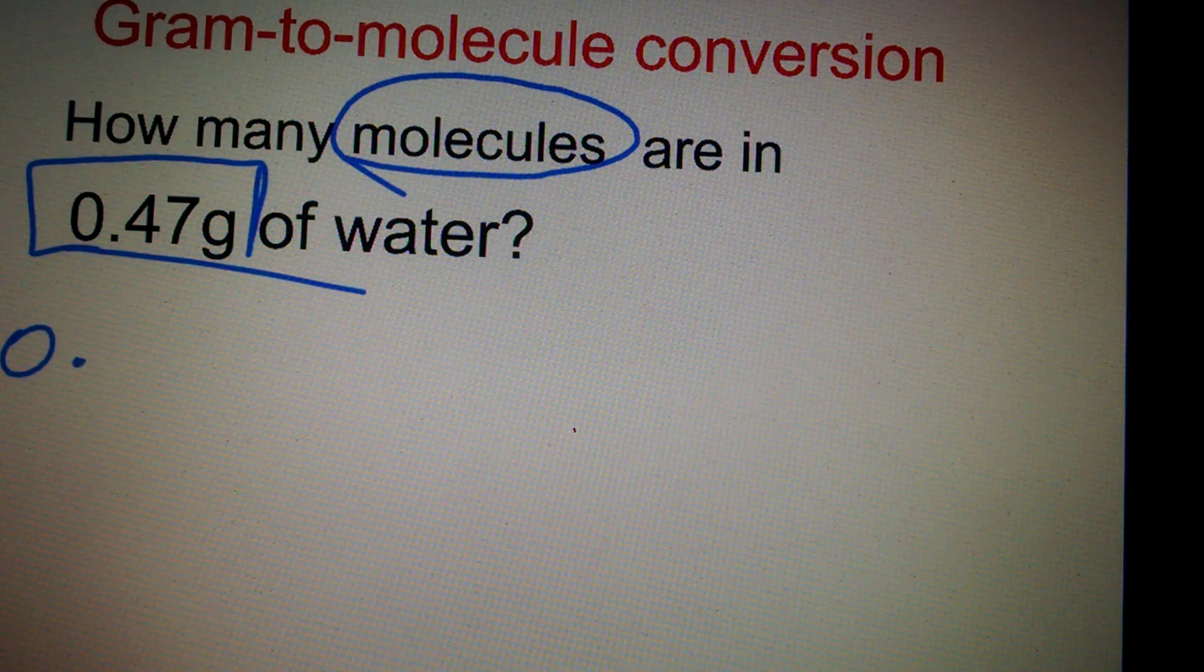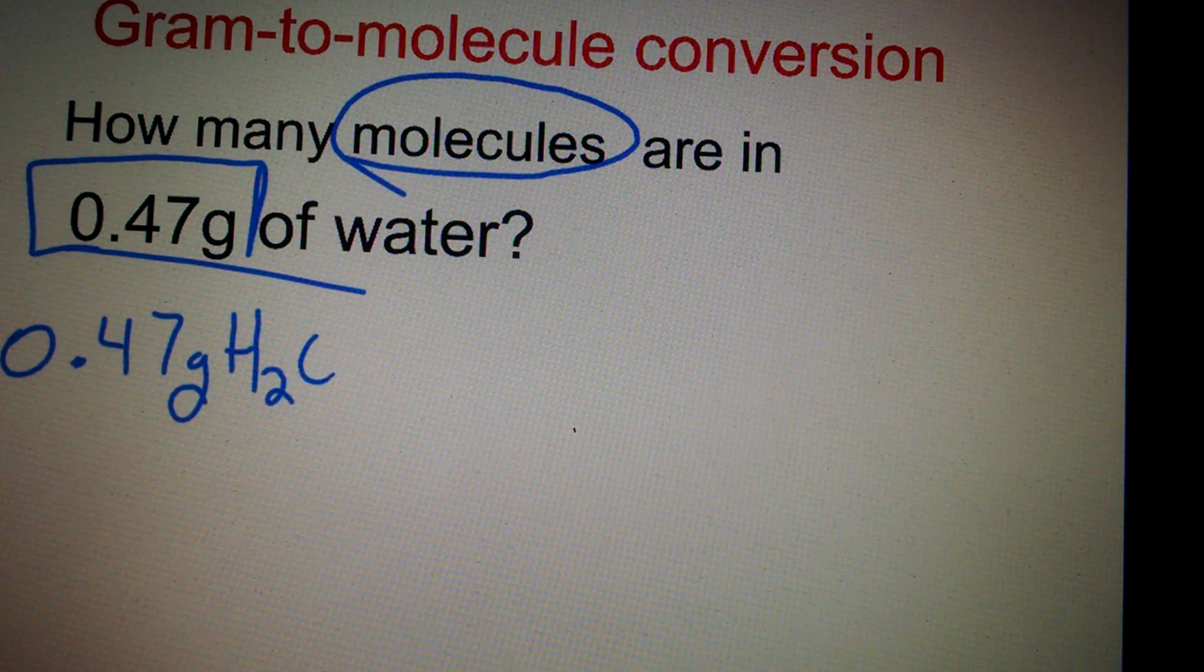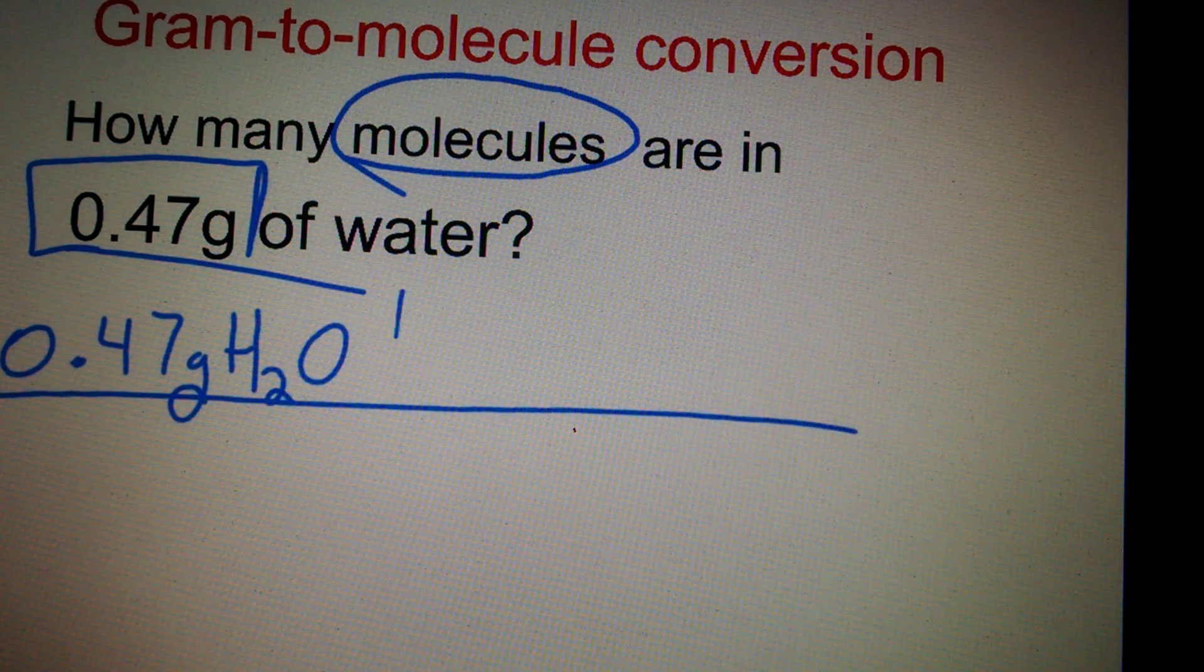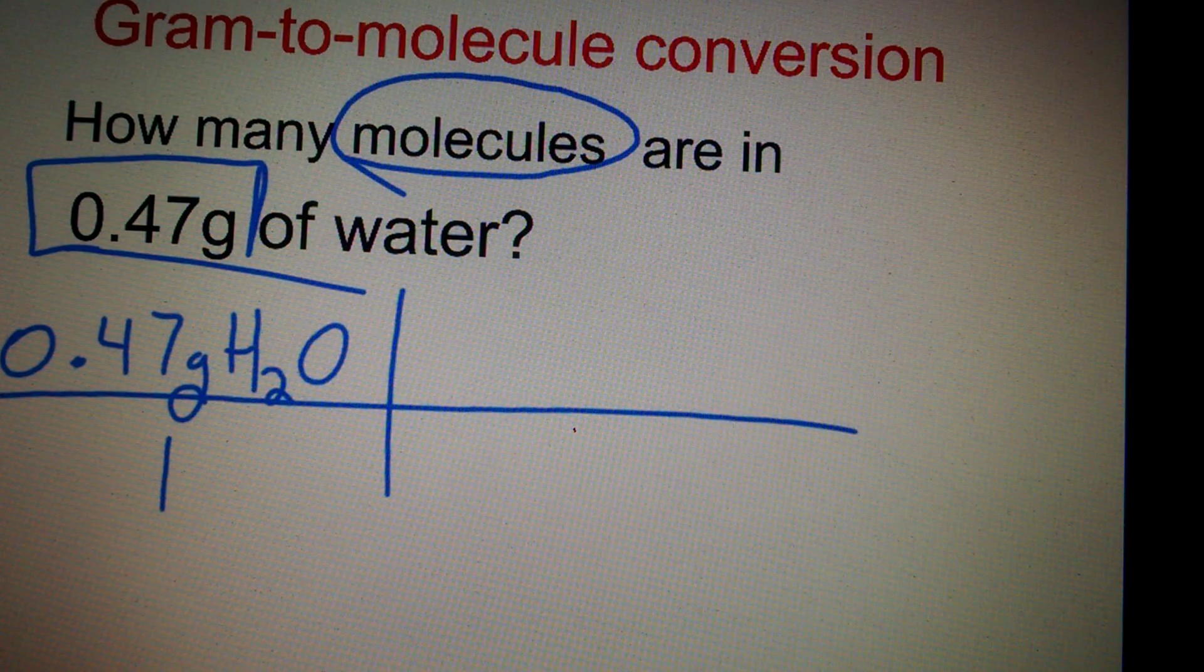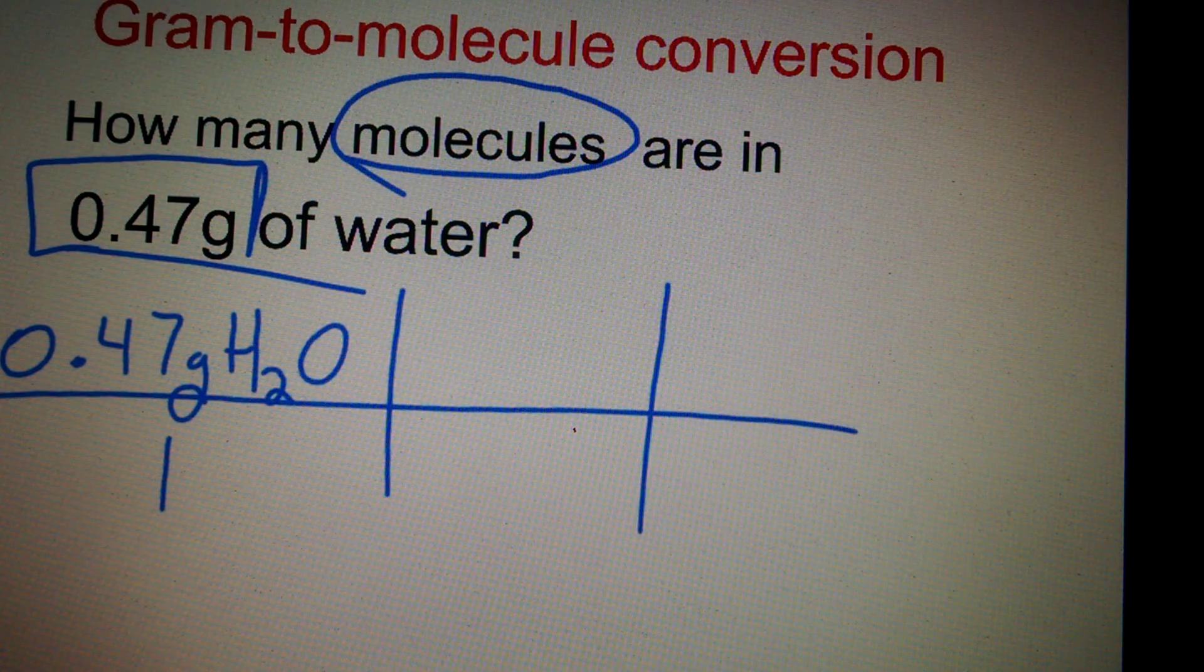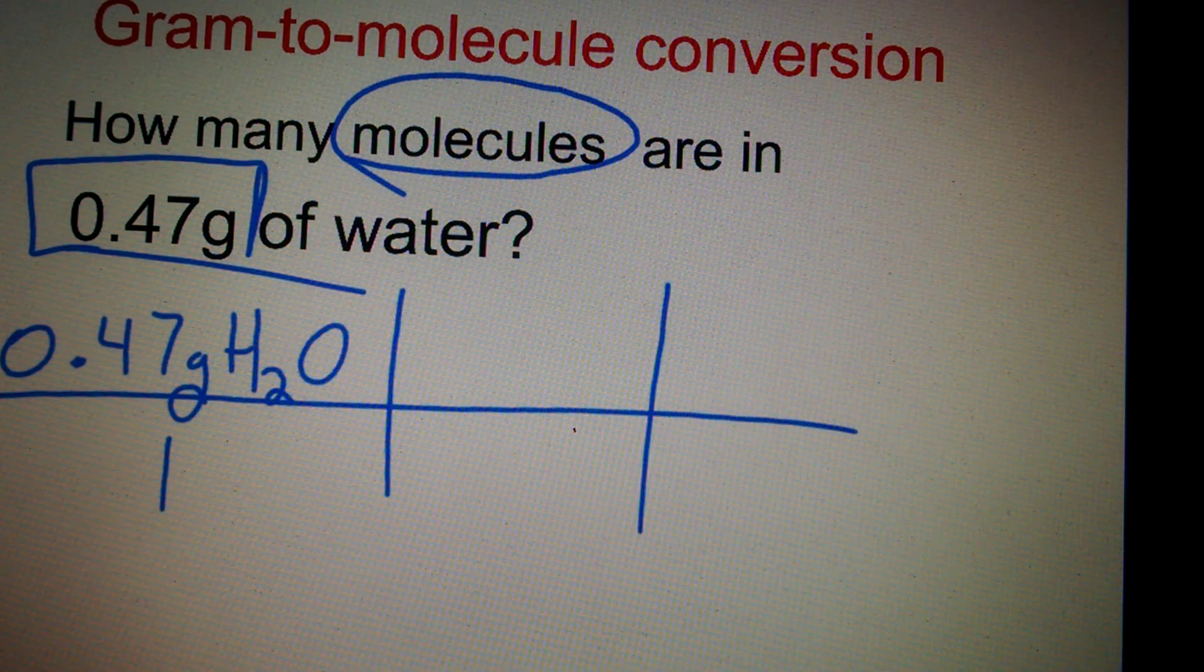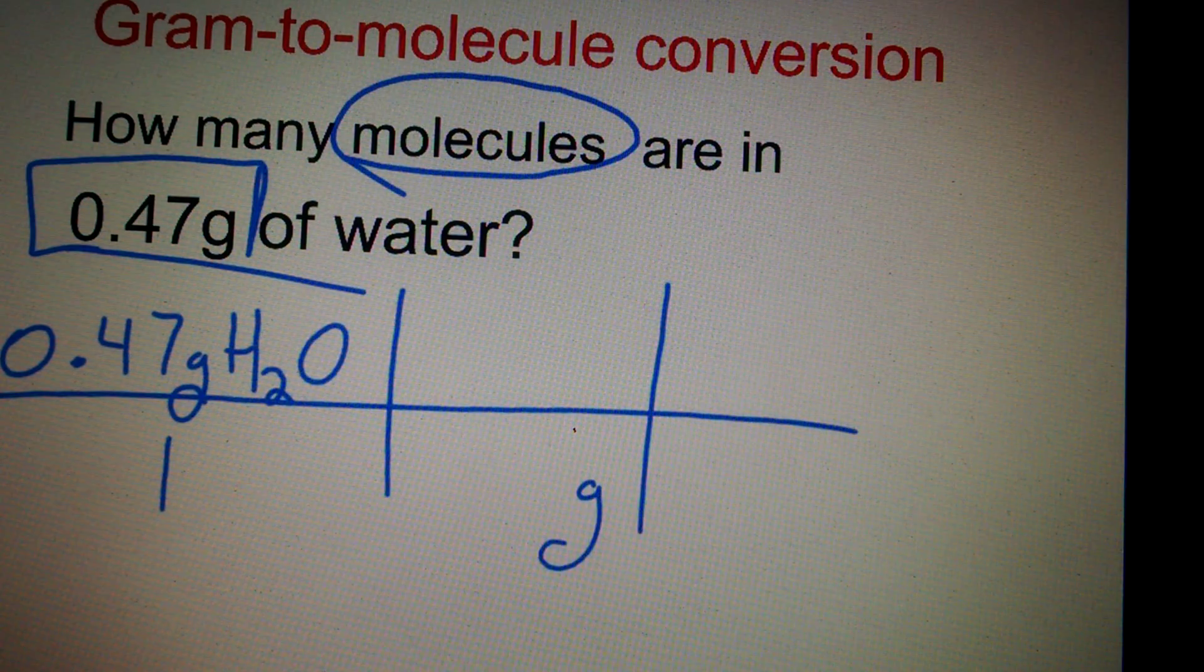As with every conversion, we'll start with 0.47 grams of water. We'll put that over 1 in our conversion as usual. And again, if we just worry about the units and not the numbers, to cancel grams out, we're going to put grams on the bottom.